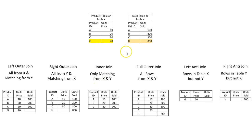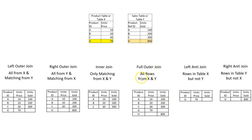These are the two tables — the product table and sales table — referred to as table X and table Y for easy reference. The full outer join means all rows from X and Y are included. Information from one table is added to the other, giving us product ID, unit price, and unit sold together. Any fields with no matching data will be blank. This is the full outer join.